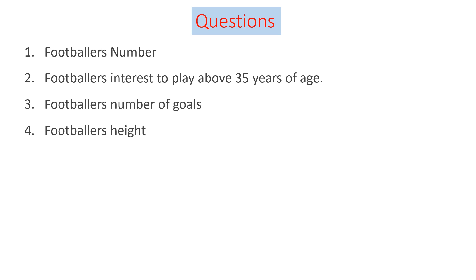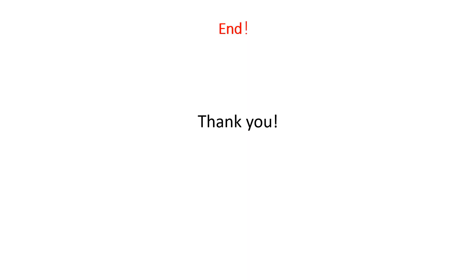This is the end of our discussion. Here are four practice questions to determine the type of measurement scale: first, a footballer's assigned number on their back; second, a footballer's interest in playing above 35 years of age; third, the number of goals a footballer scored; and fourth, a footballer's height. Try to align these questions with the types of measurement scale levels and provide your answers in the comment box. Thank you for listening, bye.